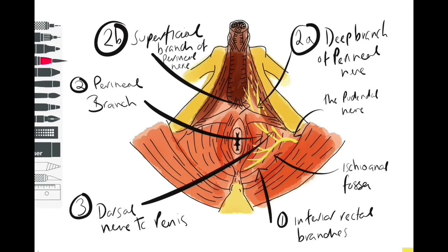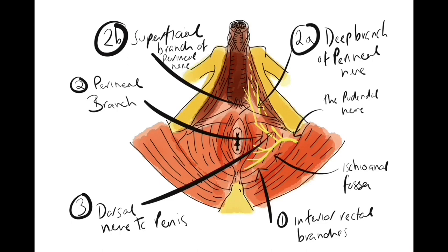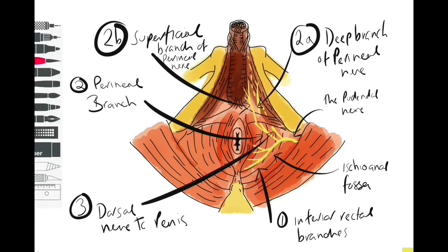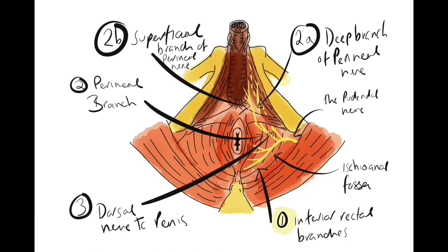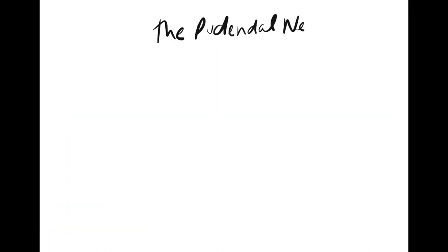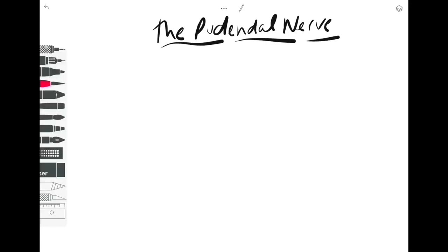The third branch is the dorsal nerve of the penis — or the dorsal nerve of the clitoris in the female. This enters into the deep perineal pouch and passes through the perineal membrane inferior to the pubic symphysis, going on to send a lot of nerve fibers to the glans of the erectile tissue.